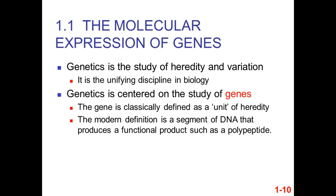The modern definition: a segment of DNA that produces a functional protein such as a polypeptide. Another name for a polypeptide is a protein — when we put a whole bunch of amino acids together we call this a protein. Proteins are polypeptides — 'poly' meaning many, and 'peptide' is the bond between amino acids.